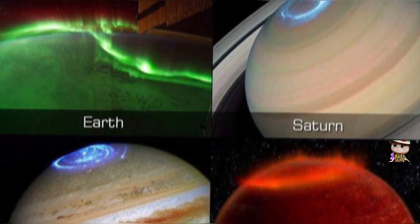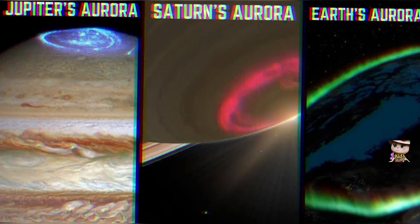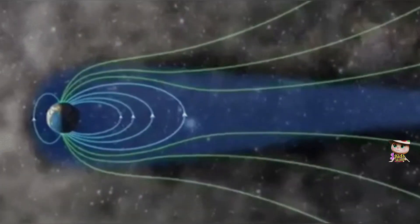As we wrap up our cosmic voyage, we've traversed the wonders of Earth, Jupiter, Saturn, Uranus, Neptune, and Venus, each offering a unique spectacle of northern lights.